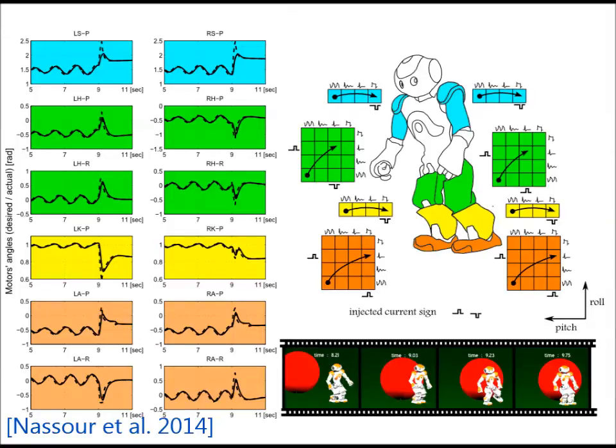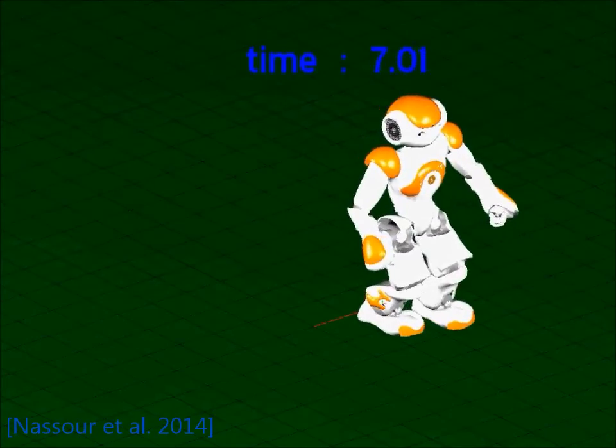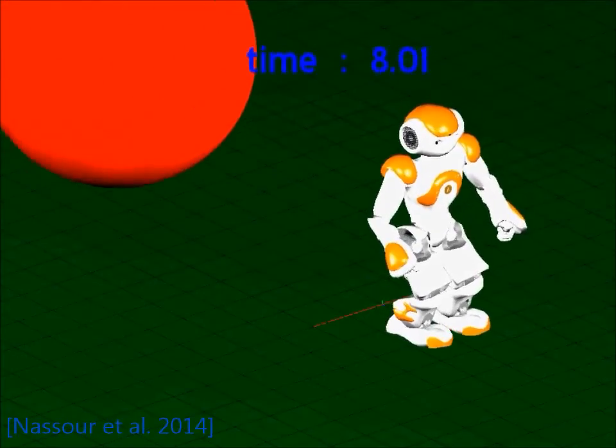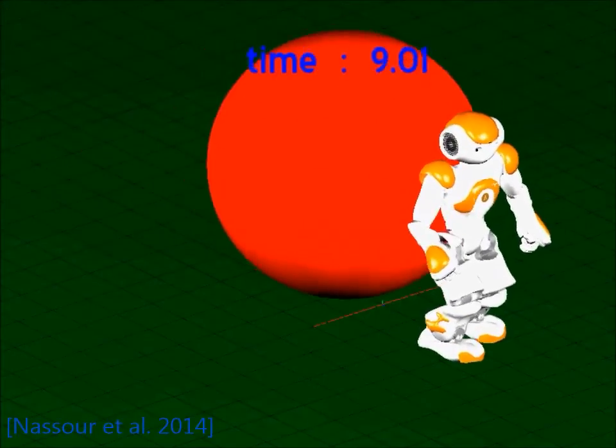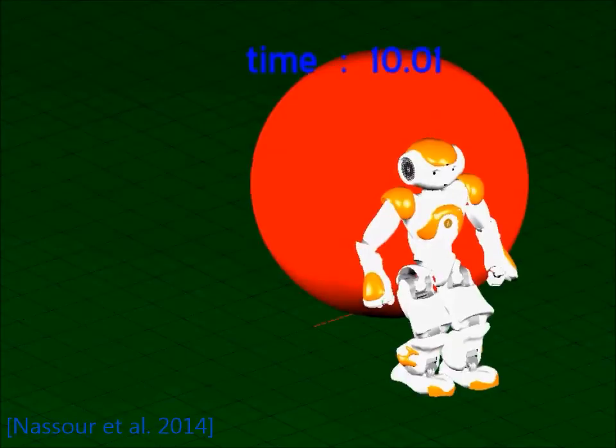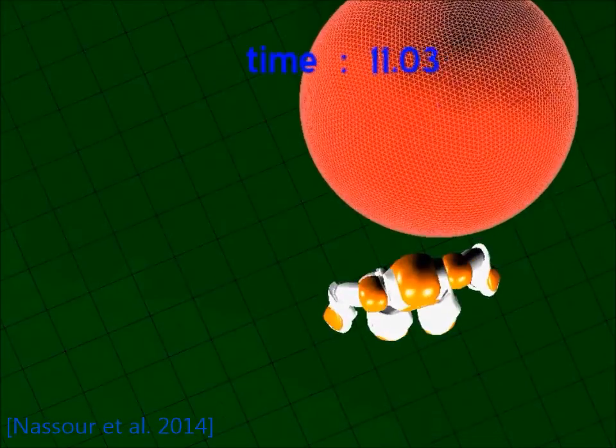The two arms will move together to the back side by switching into the plateau motion pattern at each shoulder. Hip joints switch to the quiescent motion pattern with opposite direction for pitch joints and in the same direction for roll joints. Knee joints switch to the plateau motion pattern. Ankle joint pitch switches to the plateau motion pattern, while ankle joint roll switches to the quiescent motion pattern.